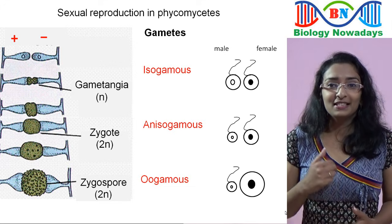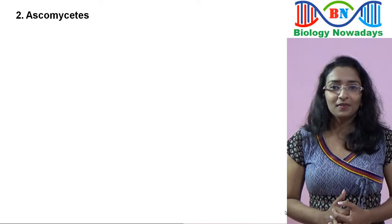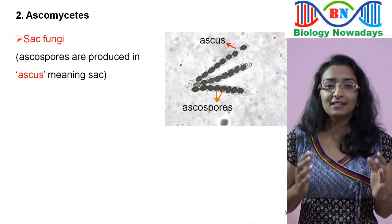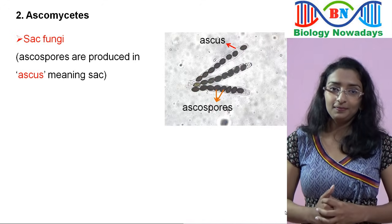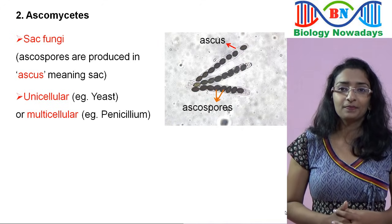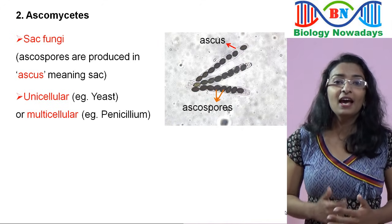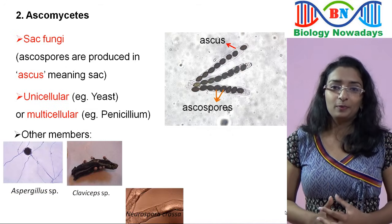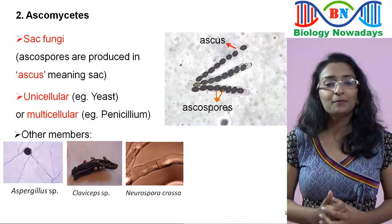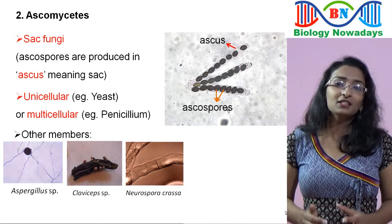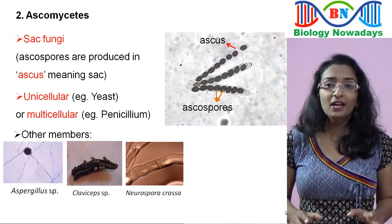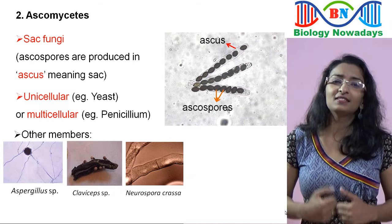Now let's move on to the second group in Kingdom Fungi — the Ascomycetes. They are called sac fungi because their sexual spores are produced in a sac-like structure called an ascus. Ascomycetes can be unicellular like yeast or multicellular like Penicillium. Other members include the genera Aspergillus, Claviceps, and Neurospora. Neurospora crassa is used as a model organism for numerous genetic, biochemical, and molecular studies because its genes are fully sequenced, it is easy to grow, and it has a haploid life cycle which makes genetic analysis simple.